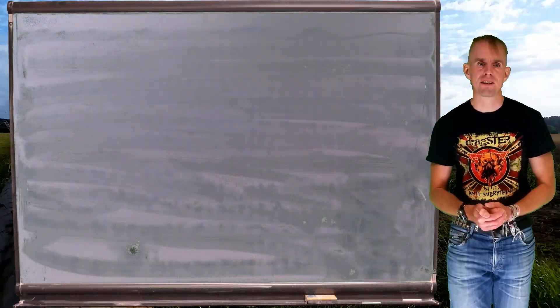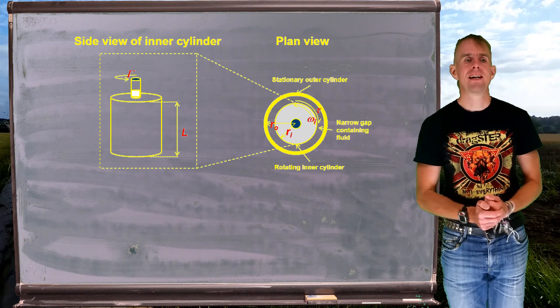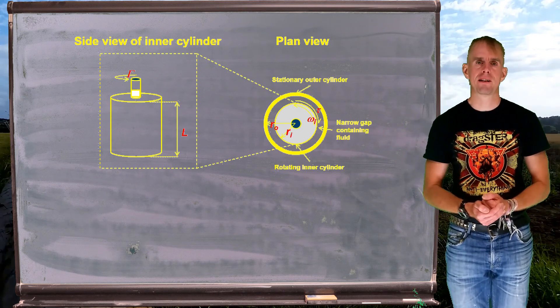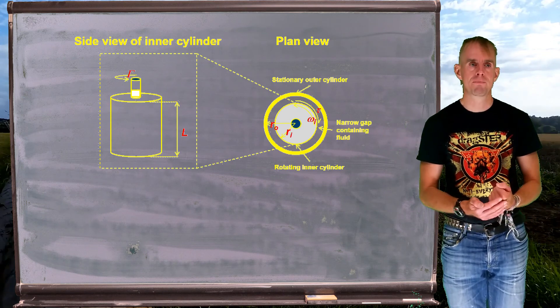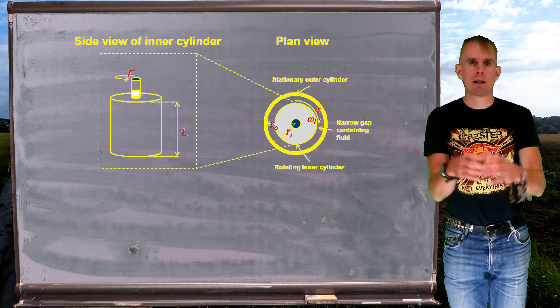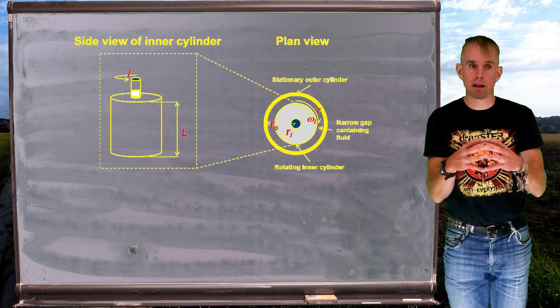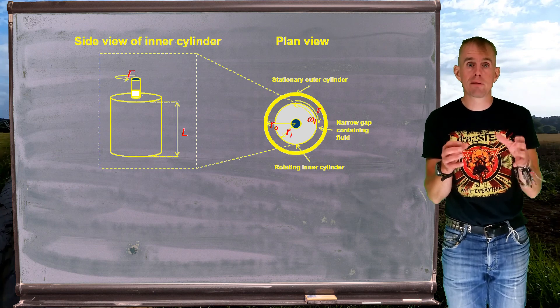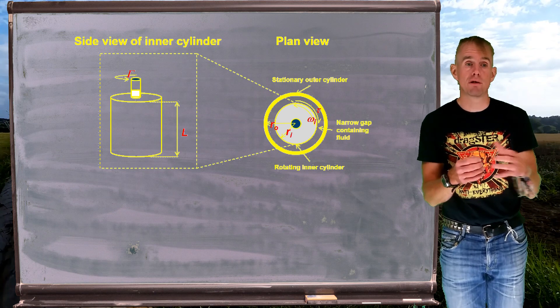So let's start by reminding ourselves what the Couette cell looks like. So here on the board is a schematic diagram of a Couette cell that you've seen a number of times before. Remember that a Couette is a solid inner cylinder inside a hollow outer cylinder, and the fluid of interest goes in the gap between these two cylinders.